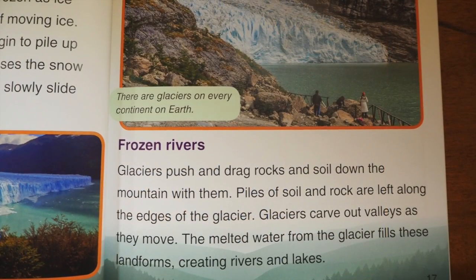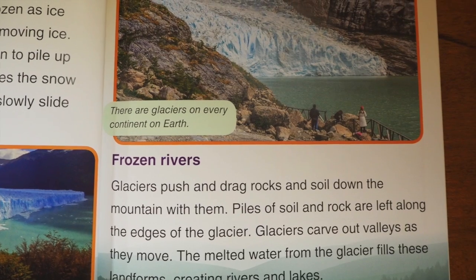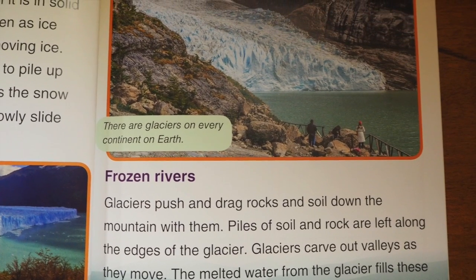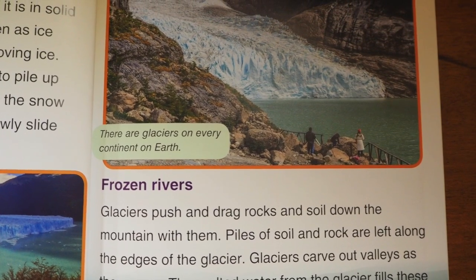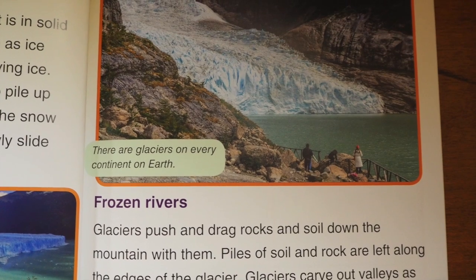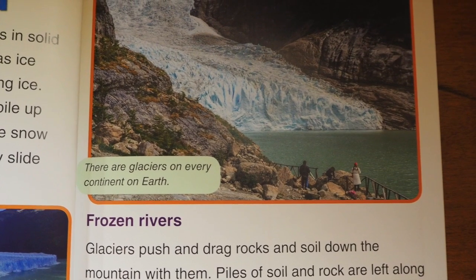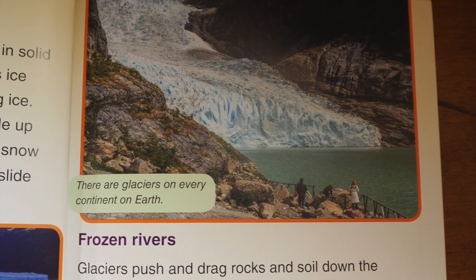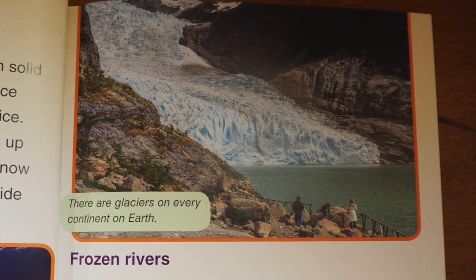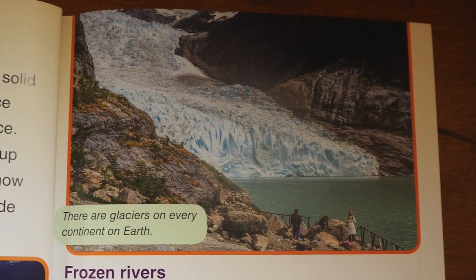Glaciers push and drag rocks and soil down the mountain with them. Piles of soil and rock are left along the edges of the glacier, and glaciers carve out valleys as they move. The melted water from the glacier spills out, creating rivers and lakes.